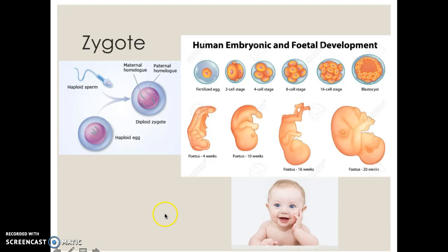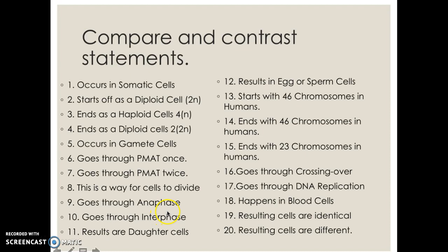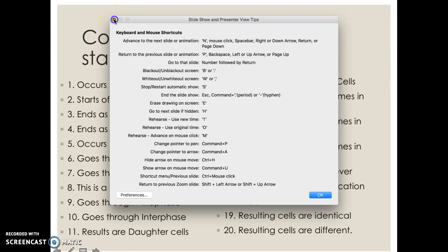On the next slide we are going to compare and contrast mitosis and meiosis using a Venn diagram. Some terms are going to go only for mitosis, some will be for both, and some will be for meiosis only. There are 20 terms — make sure you pause the video and write them in the correct spots. We will go over some of these, but make sure you have placed them correctly. I hope you found this informative, and I will see you on the next one.